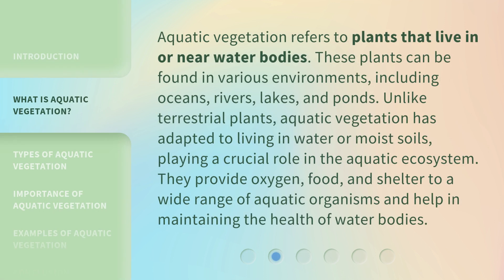Aquatic vegetation refers to plants that live in or near water bodies. These plants can be found in various environments, including oceans, rivers, lakes, and ponds. Unlike terrestrial plants, aquatic vegetation has adapted to living in water or moist soils, playing a crucial role in the aquatic ecosystem. They provide oxygen, food, and shelter to a wide range of aquatic organisms and help in maintaining the health of water bodies.